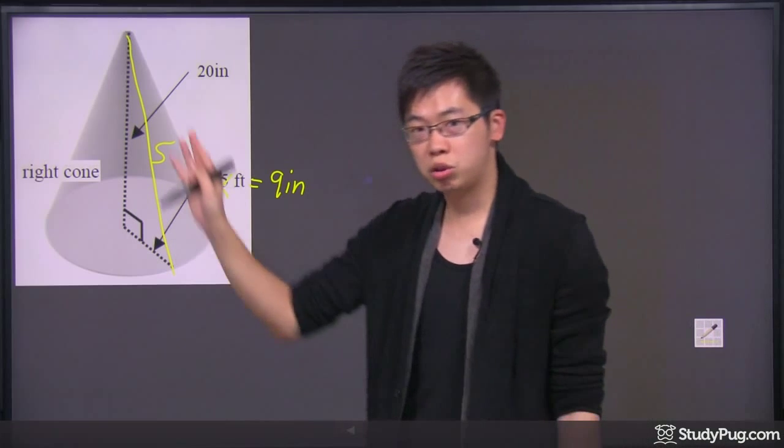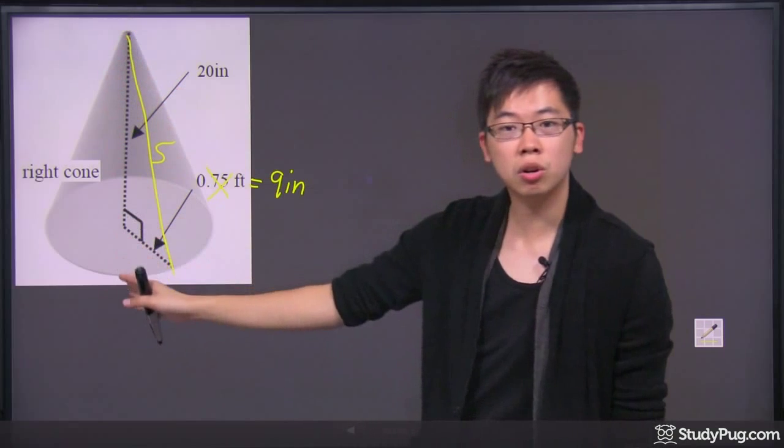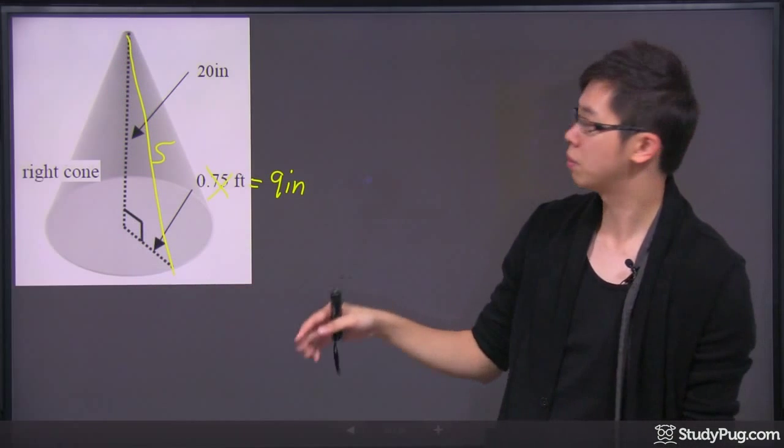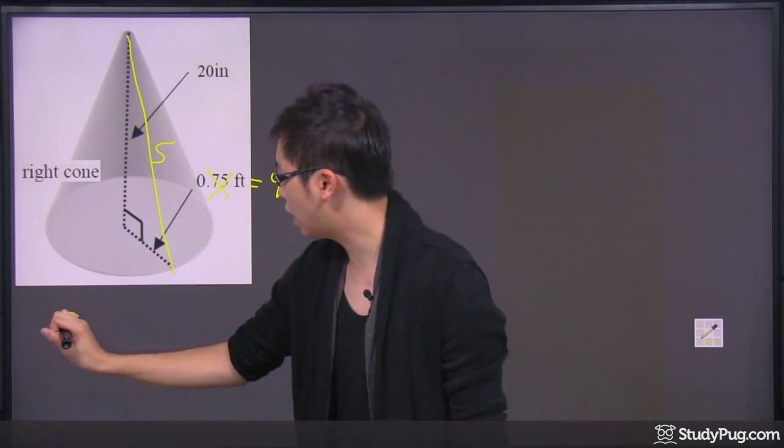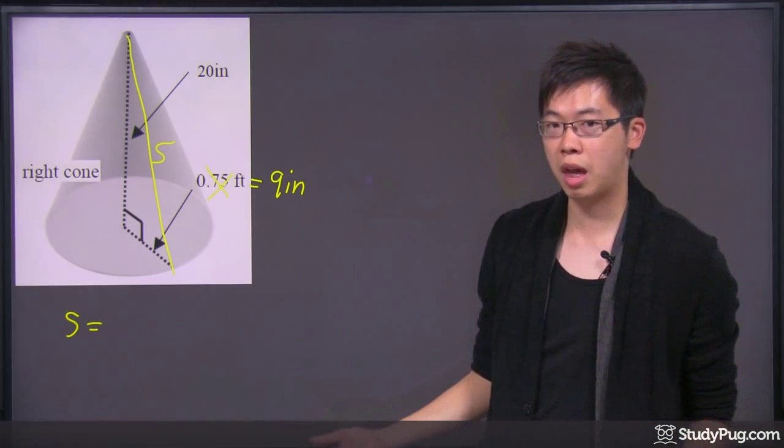As you can see, you get yourself a right triangle right here. We've got the bottom piece, which is 9 inch. We've also got the center, which is the height. It's the 20. The slanted side, which is the S, is just going to be calculated by the Pythagorean theorem.